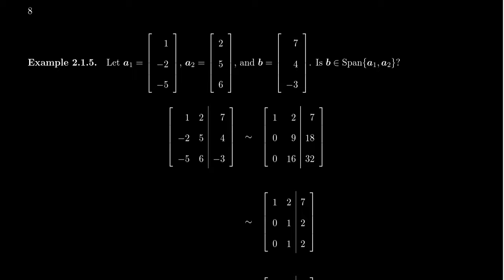Let's look at some examples. We'll work over the real numbers here. So given the vectors a1, which is 1, negative 2, negative 5, and a2, which is 2, 5, 6, is the vector 7, 4, negative 3 in the span of these two vectors?